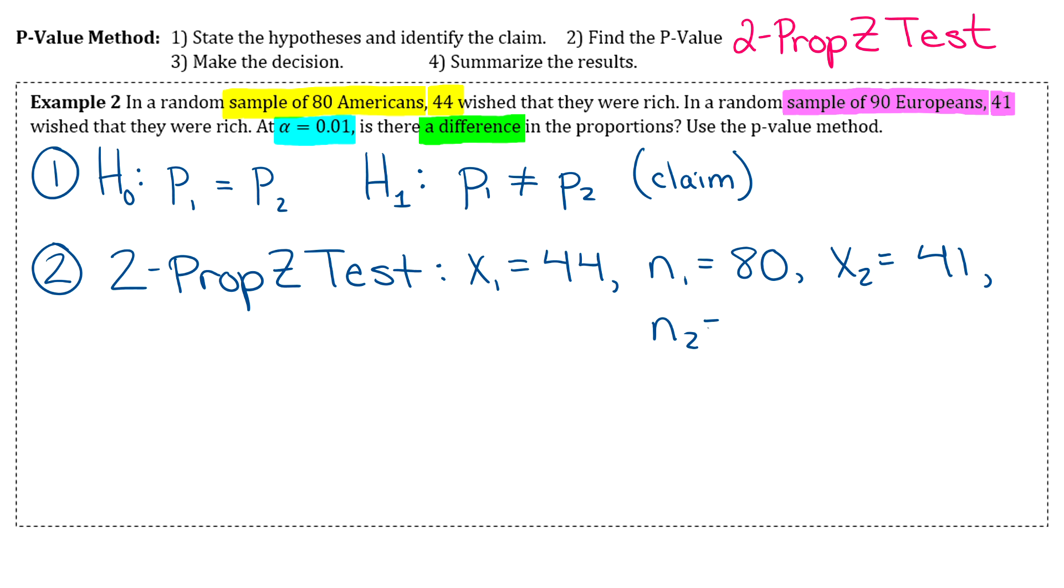x2 is the number of people from the second sample who have that characteristic, so 41 out of the total of 90. So n2 is 90, and then make sure you select the not equal to p2 part.